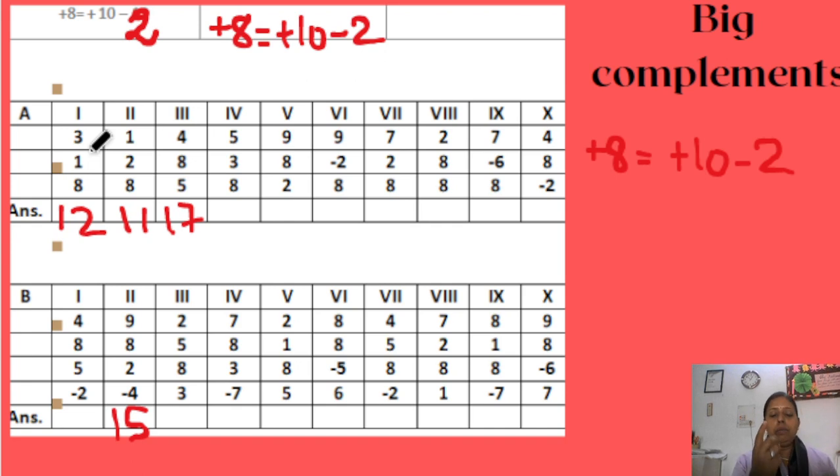Next question, 1 plus 2 plus 8 again, 10 up, 2 down. My answer is 11. Next question, 4 plus 8 plus 10 minus 2 plus 5. My answer is 17.